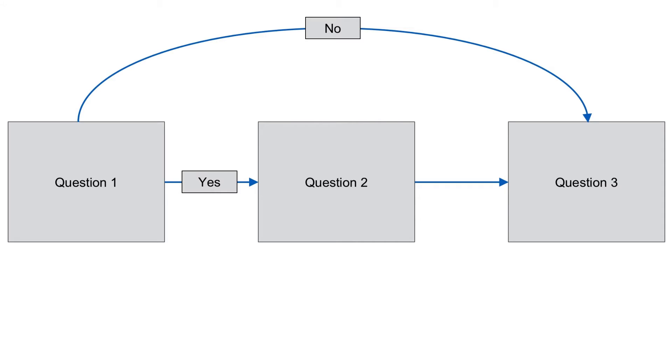In the graphic displayed here, if the participant answered no to question one, then the next question they are asked is question three, skipping question two entirely.